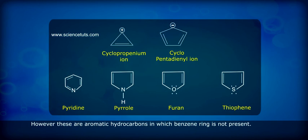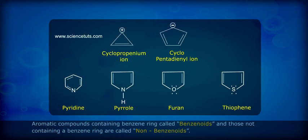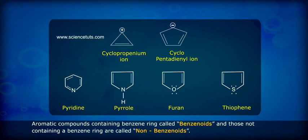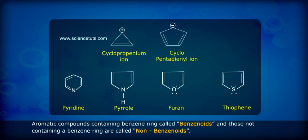However, there are aromatic hydrocarbons in which a benzene ring is not present. Aromatic compounds containing a benzene ring are called benzenoids, and those not containing a benzene ring are called non-benzenoids.